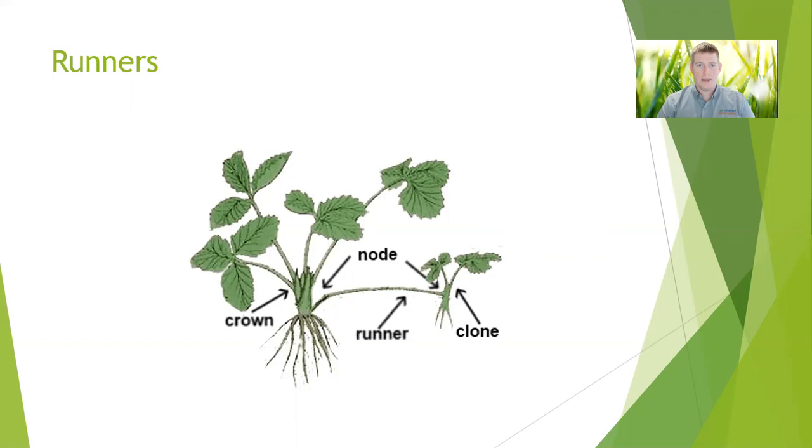What runners do is create a clone, which we call the daughter plant, from a mother plant. All that's happening here is that clone is produced by the mother plant.